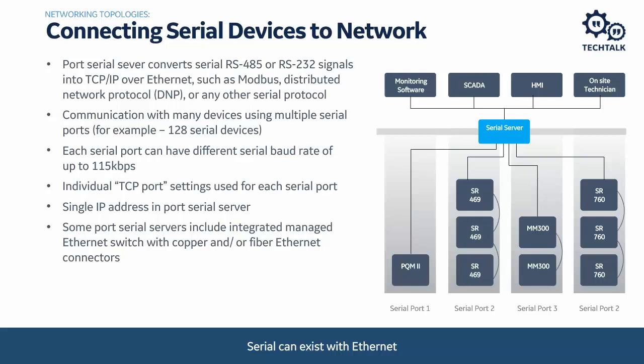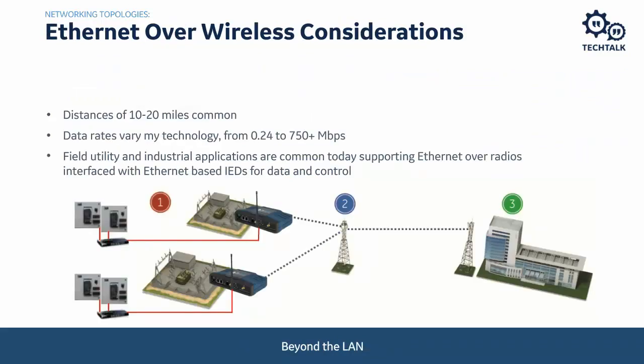Most of today's discussion has been focused on substation communication within the substation — the local area network. There is a need to expand the network beyond the substation for remote applications such as SCADA, energy management, remedial action schemes, and phasor measurement units. However, there will be limitations in the infrastructure we can install due to budget constraints — the cost of running fiber from point A to point B may not be economical, or the terrain might prevent it. We might need to go over a river or mountains where we can't run fiber.